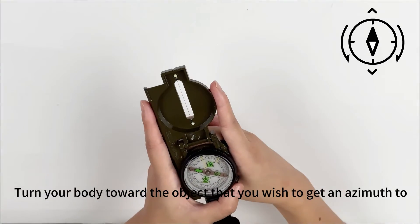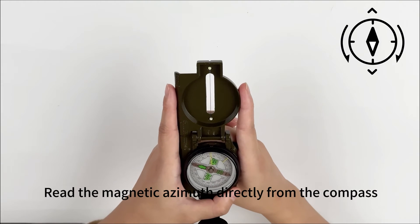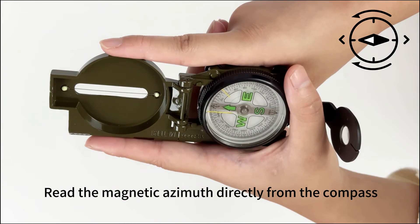Turn your body toward the object that you wish to get an azimuth to. Read the magnetic azimuth directly from the compass.